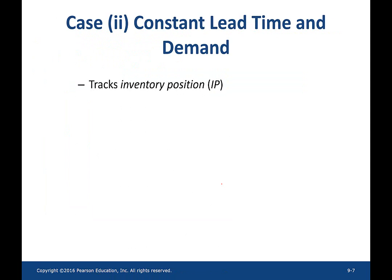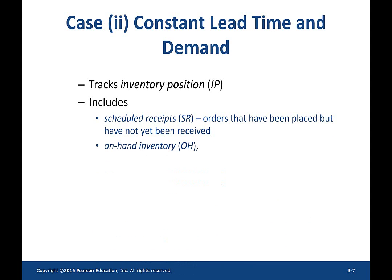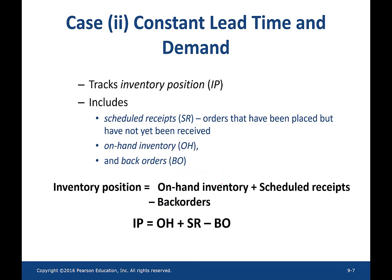For instance, when the lead time is 0, it is simple — when the buyer runs out of the product, he or she can order and receives it instantaneously. That is not possible with a constant lead time. Now the buyer needs to know: how many orders are to be received (orders placed but not yet received, i.e., scheduled receipts), how many are on hand (physical inventory), and how many pending orders need to be satisfied (back orders). The inventory position equals on-hand plus scheduled receipts minus back orders.